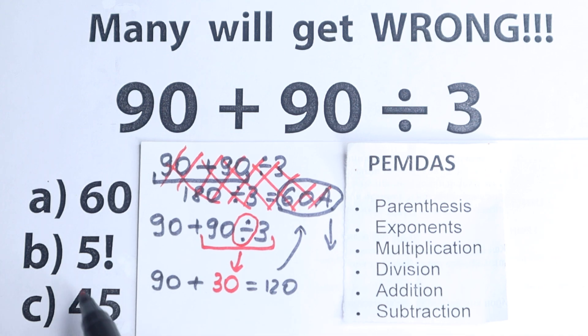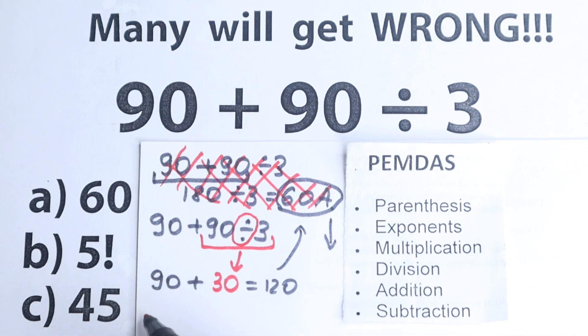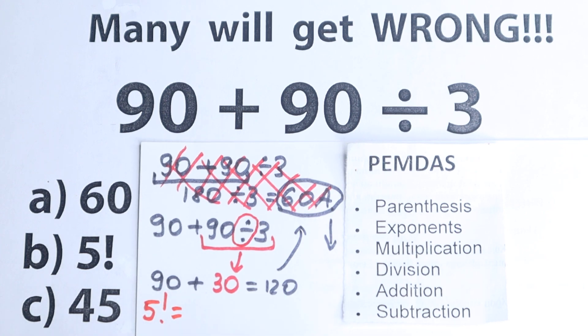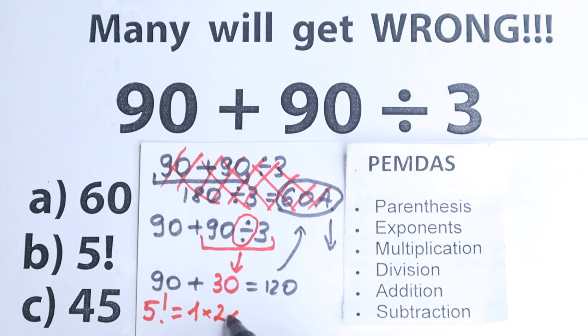But if we look closely to these options, we have something like 5 factorial. Let's look at it. So 5 factorial, this is a product from 1 to 5, or like 10 factorial, product from 1 to 10, like a product from 1 until this number. So we have 1 times 2 times 3 times 4 and times 5. Let's look at it.